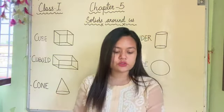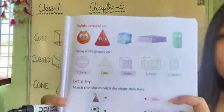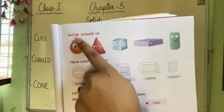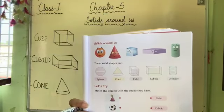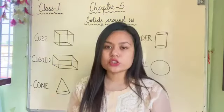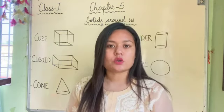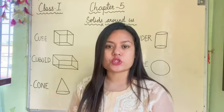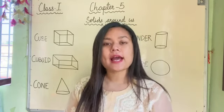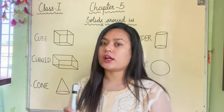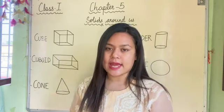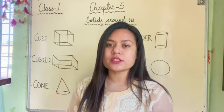Here, shapes are given. These are solids around us, these are solid shapes. Now, what are solid shapes? Do you know what are solid shapes? Solid shapes are those shapes which have three dimensions - like length, width and height. These are three dimensions. We also call them 3D shapes because they have three dimensions.